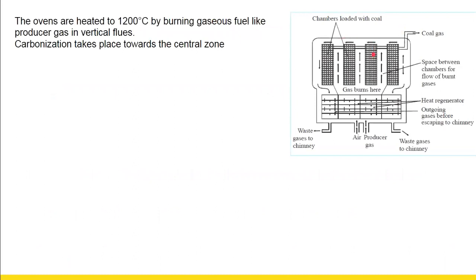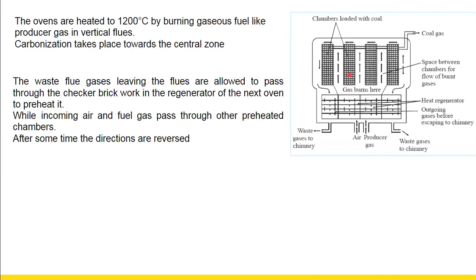The ovens are heated to about 1,200 degrees centigrade by burning gaseous fuel like producer gas in vertical flues. Air and producer gas mixture is sent in and the gases burn, maintaining a temperature of about 1,200 degrees centigrade, and carbonization takes place towards the central zone. The waste flue gases leaving the flues are passed through a checker brickwork in the regenerator of the next oven to preheat it, while incoming air and producer gas is passed through other preheated chambers. After some time, the directions are reversed, so the heat of the waste gases is utilized for heating the incoming air and producer gas mixture.